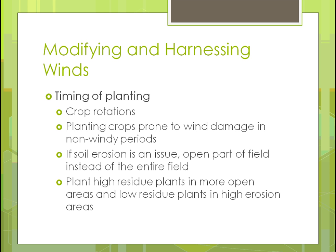Regarding timing of planting, you can do crop rotations. If plants are prone to wind damage, put them in during non-windy periods. If soil erosion is an issue, only open up part of a field at a time — rather than plowing the whole field, use the no-till planters we discussed in Unit 2 that just open and close right away, leaving residue in place and reducing soil erosion. You can also place high-residue plants in more open areas and lower-residue plants in higher-erosion areas to help protect the soil.